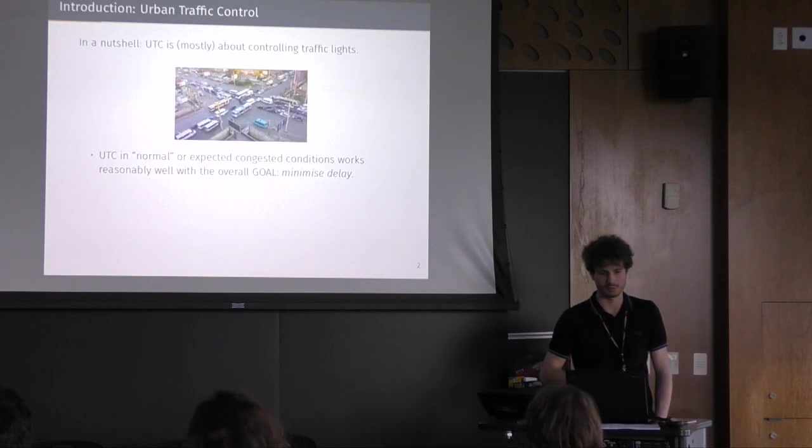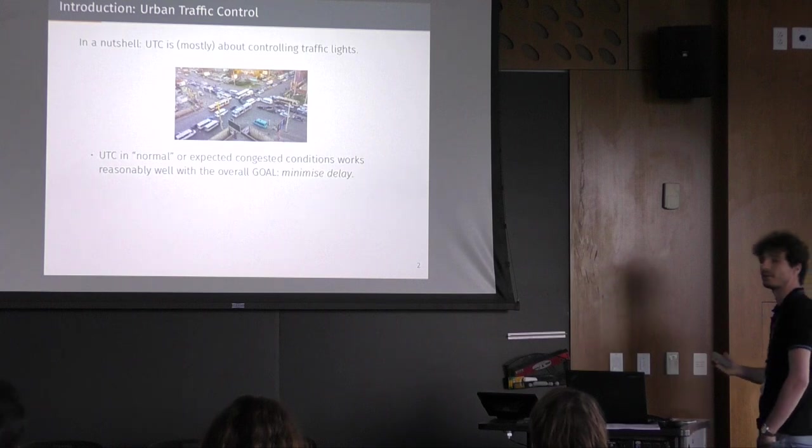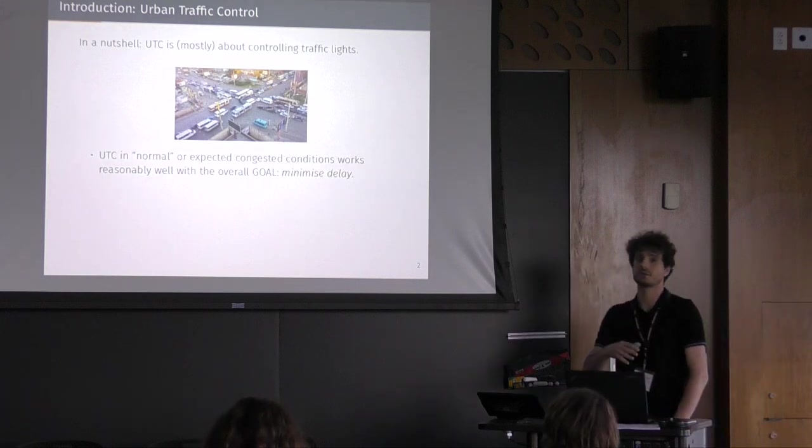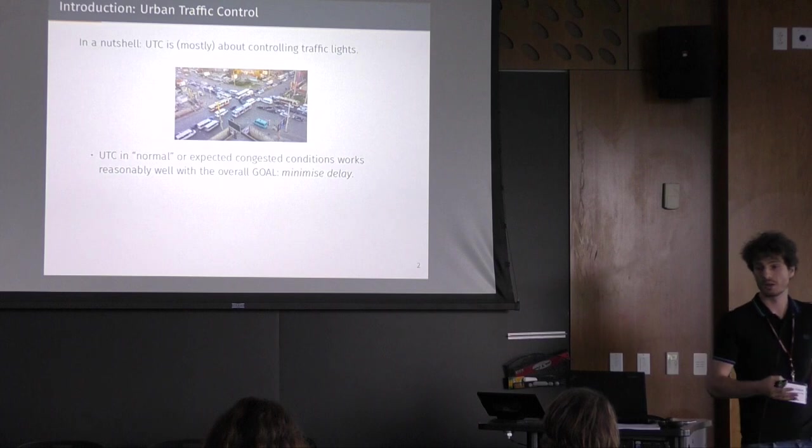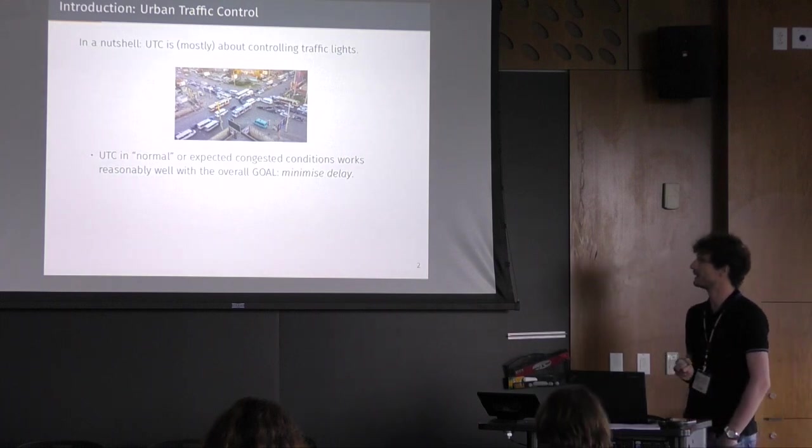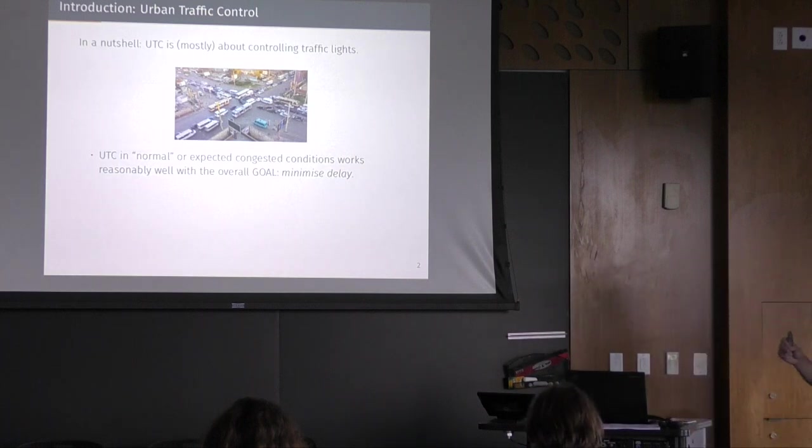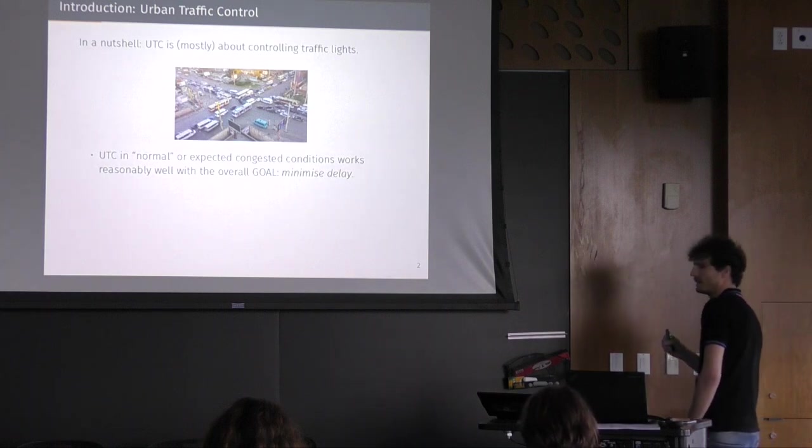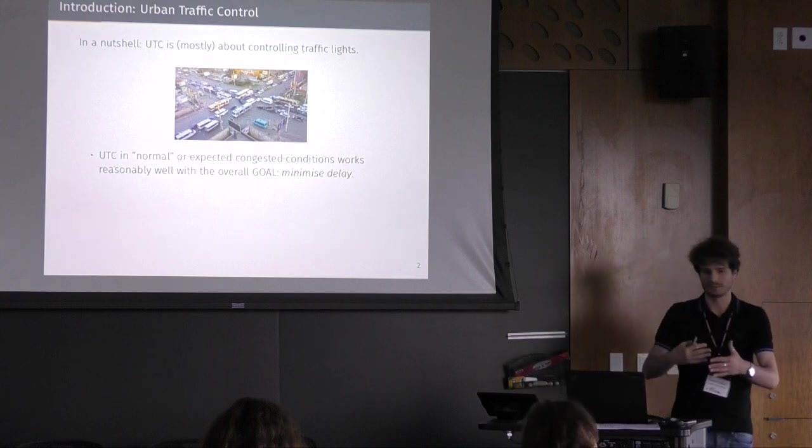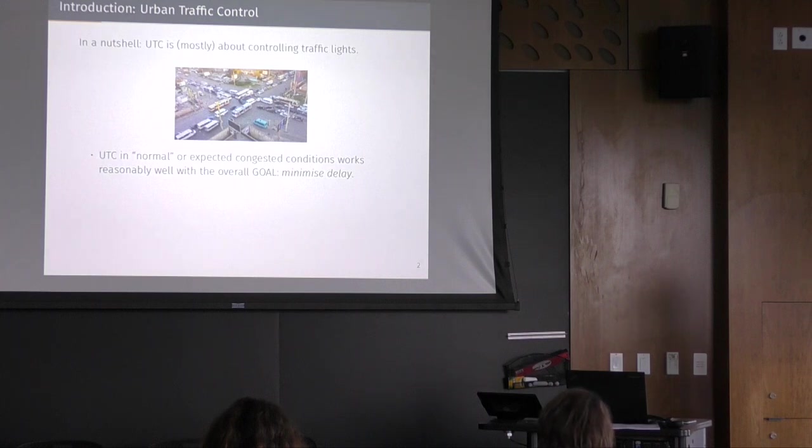Now, in terms of urban traffic control, we can say that, for cutting a long story short, what it is about, it's mostly about controlling traffic lights for dealing with traffic, usually with congestion or rush hours or planned events, things like that. And in normal or expected congested condition, it works pretty well, reasonably well, with a single overall goal, which is to minimize the delay. Where minimize delay means that every vehicle, you're trying to minimize the delay for every vehicle which is navigating through the area that you are controlling.